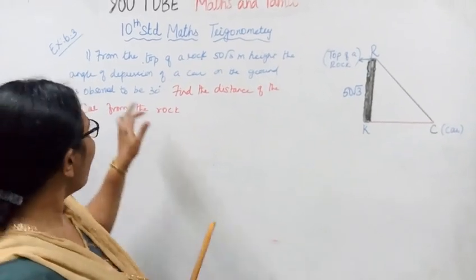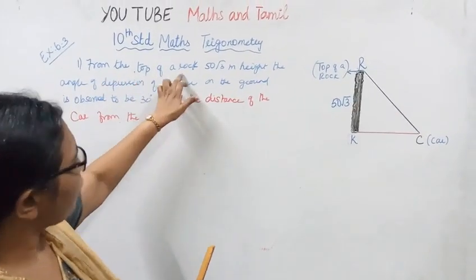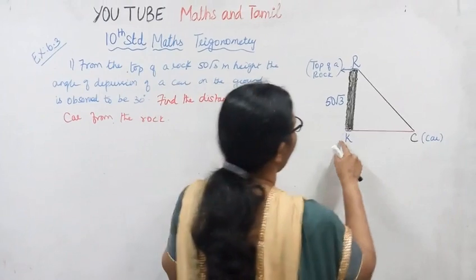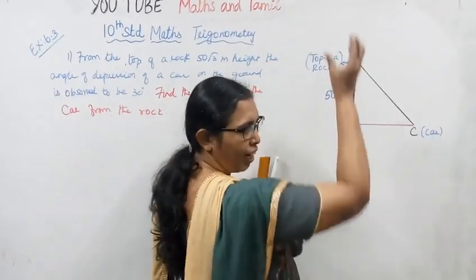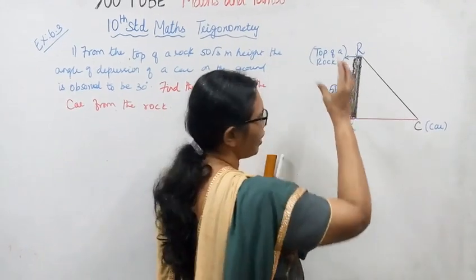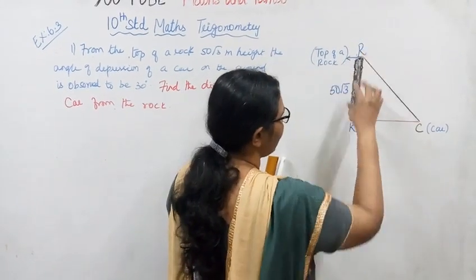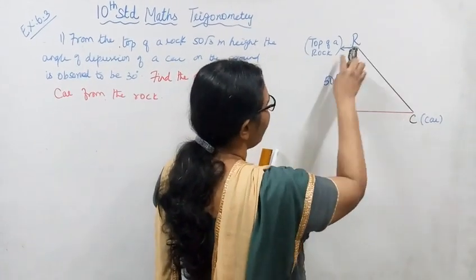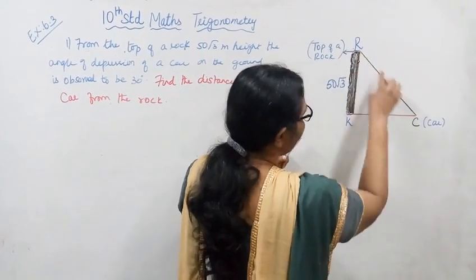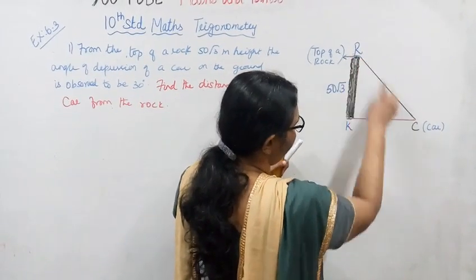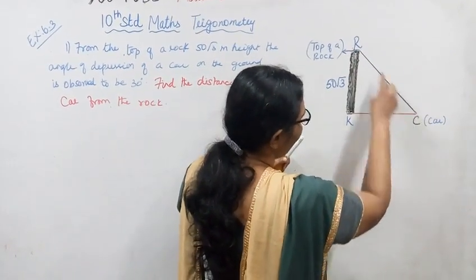For this problem, we have a vertical rock. Let me draw and label the diagram. This is the top of the rock, this is the rock itself, and here on the ground is the car.